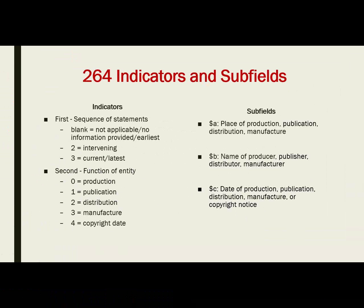Then you have a two, which is the distributor. Distribution, manufacture, and copyright date are all non-core — you don't have to include those in the record, unless, for example, there's no publisher listed but there is a distributor. You see that a lot with movies and DVDs because they might list the distribution company. Manufacture refers to the printer — who produced the item — and you don't see that listed a lot. That brings us down to four, which is the copyright date, and I'll get into that a little bit later.